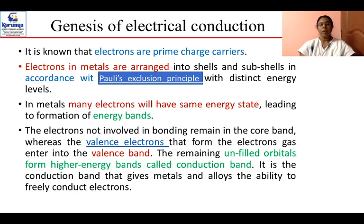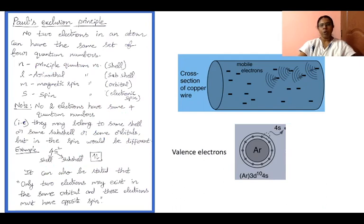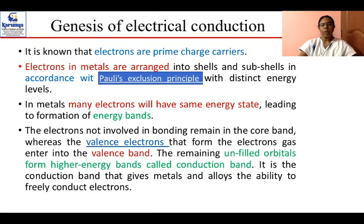The conduction band gives metals the ability to conduct free electrons. For example, in a copper wire, mobile electrons pass through mainly because of the availability of the conduction and valence bands, where unfilled orbitals form the conduction band. Half of the conduction band is already filled, and the Fermi level in a conducting material sits within the band, unlike in insulators and semiconductors where it lies within the band gap.